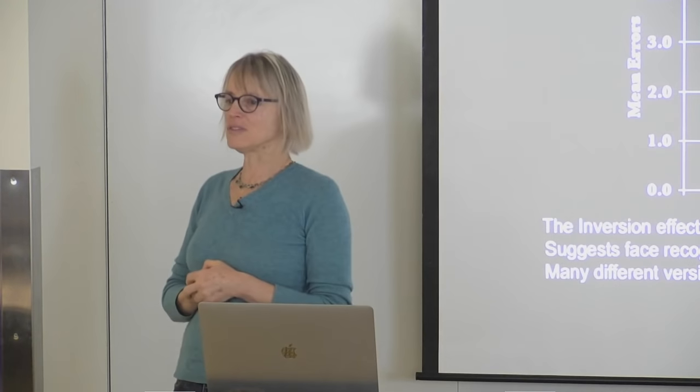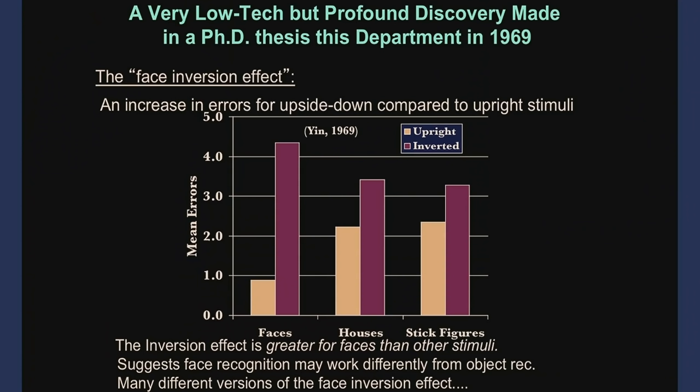There are lots of versions of the face inversion effect, one you may have seen before. If you look at faces that are upside down, they look sort of normal. But then if you rotate them, you realize there's something deeply weird going on. You're much more sensitive to grotesquely distorted faces when you see them right side up than when you see them upside down. That's another version of the face inversion effect, and there are many incarnations of this effect.